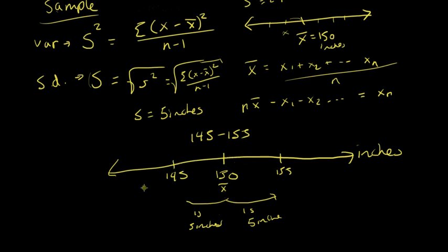Why don't we talk about 'within one variance' from the mean? Because the number line is in inches, and variance is in inches-squared. I can't move a certain number of inches-squared along an inches axis — it doesn't work. That's why we don't say 'within one variance from the mean'; we only talk about standard deviations.